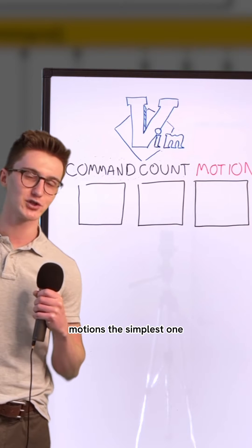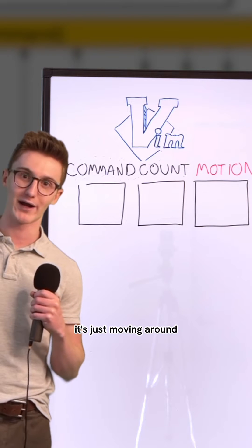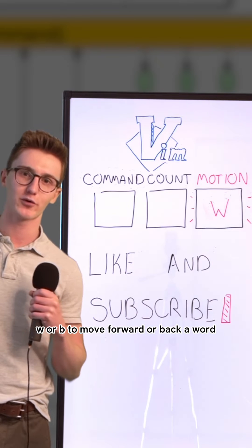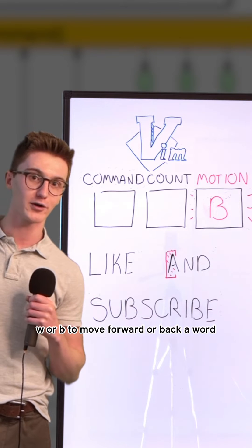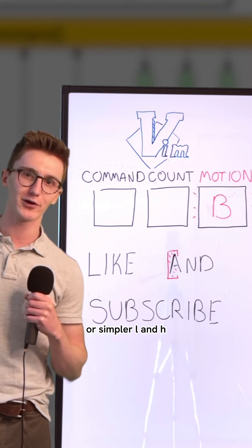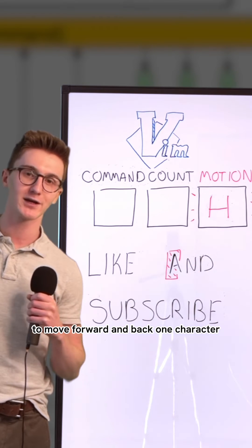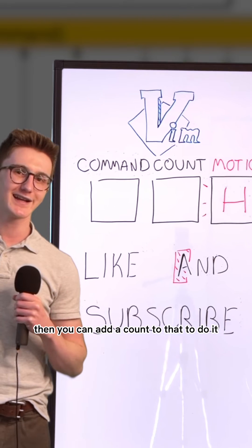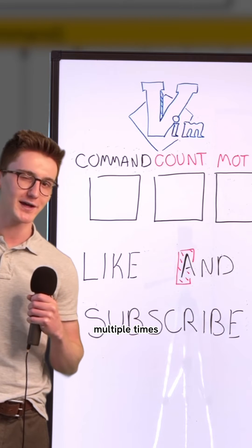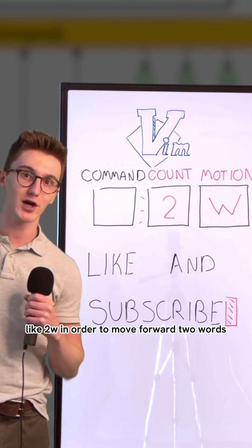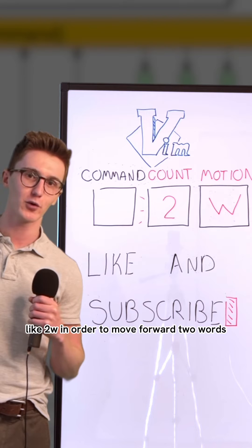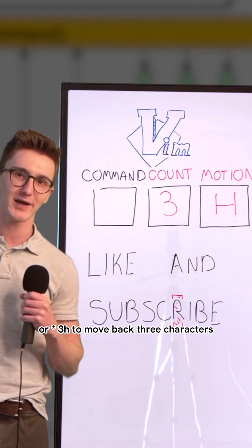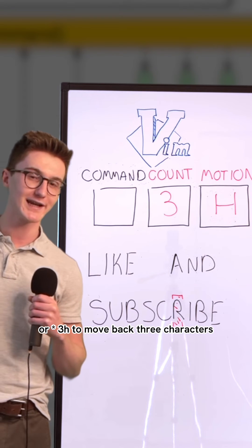Motion is the simplest one — it's just moving around. So you could use W or B to move forward or back a word. Or simpler, L and H to move forward and back one character. Then you can add a count to that to do it multiple times, like 2W in order to move forward two words, or 3L to move back three characters.